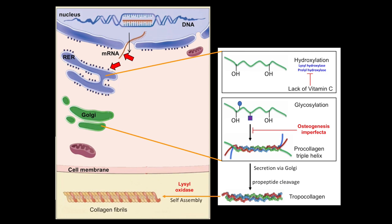Outside the cell, the collagen molecules self-assemble into fibrils, which can become stabilized and form even larger fibers. This fibrillar structure is also stabilized by the formation of crosslinks between the collagen, catalyzed by the enzyme lysyl oxidase. You should know the basic steps shown in the diagram, remember the enzymes discussed, and be able to predict the results of mutations and defects in each step.